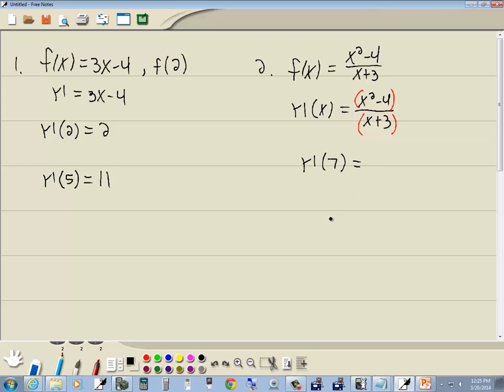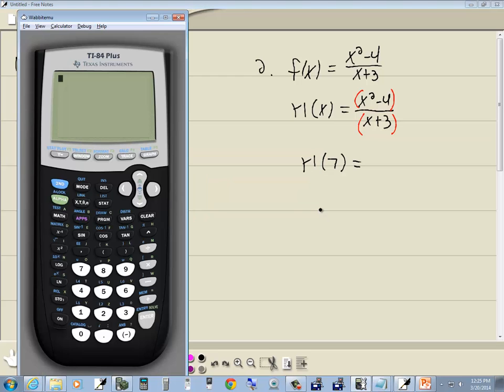So let's see what that gives us. We'll go into our vars, right arrow to y vars, enter a function. And then we'll do y1, beginning parentheses, 7, closing parentheses, enter. Now it gives us 4.5, and to change any decimal to fraction, you can do math, enter, enter. So this gives us 9 halves.